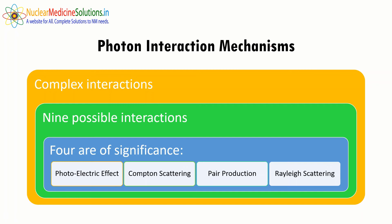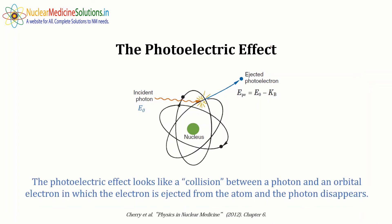In the photoelectric effect, an incident photon interacts with an inner orbital electron and transfers its entire energy to that electron. If this energy is sufficient to overcome the binding energy, the electron is ejected with some kinetic energy. This ejected electron is called a photoelectron. The energy of the photoelectron equals the energy of the incident photon minus the binding energy of that electron in its shell. The photoelectric effect looks like a collision in which the electron is ejected and the photon disappears.